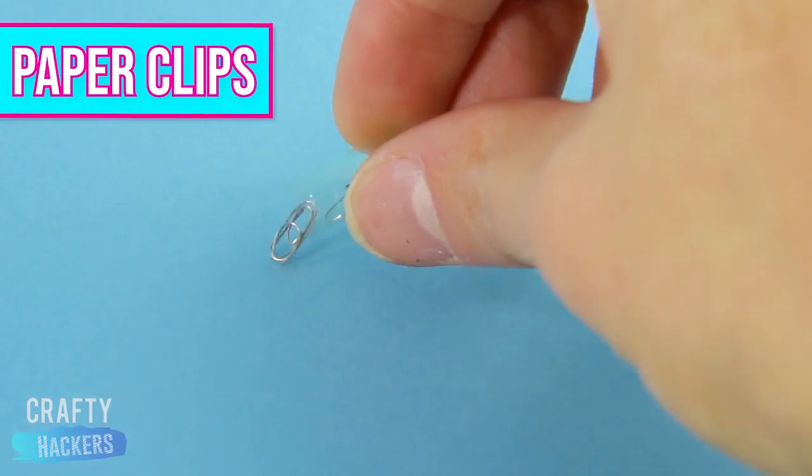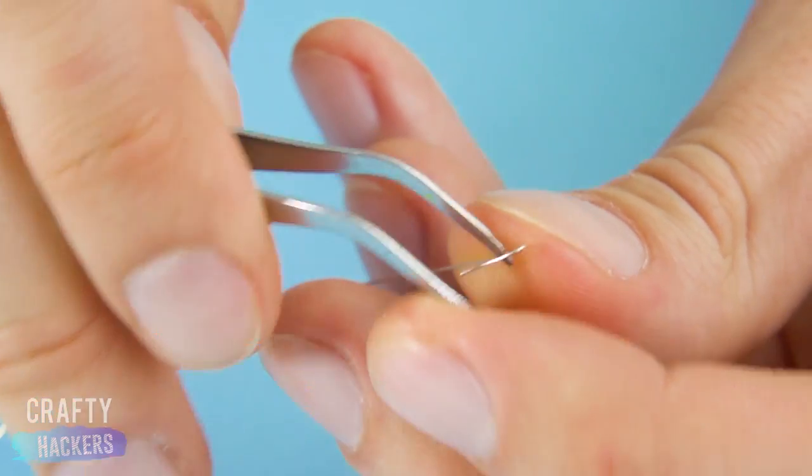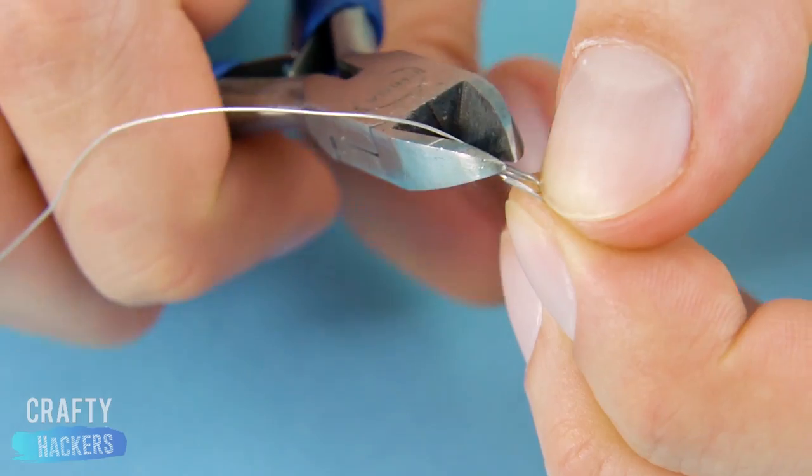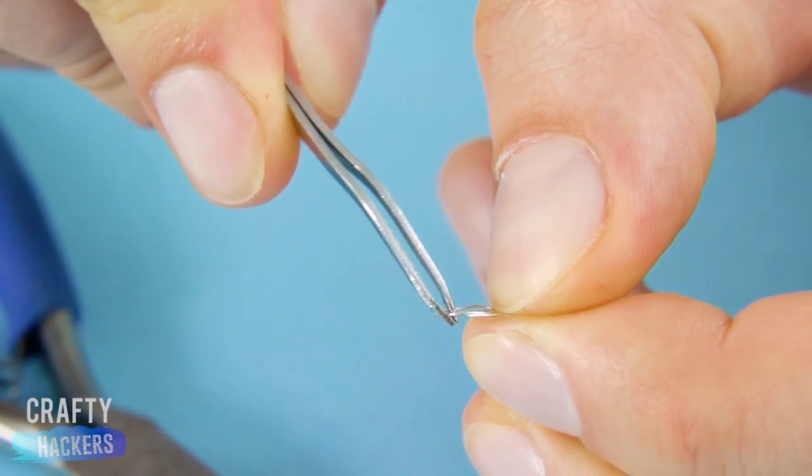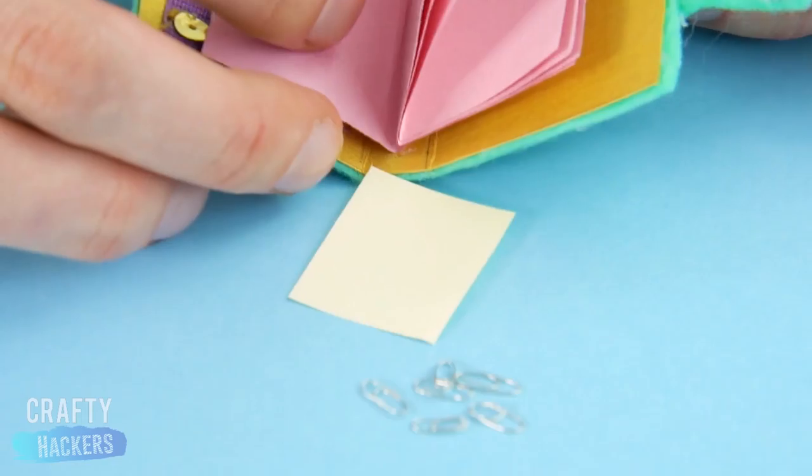Paper clips! All you have to do for this hack is use pliers to twist a piece of wire into the shape of a tiny paper clip. That's really all there is to it. And it actually works!